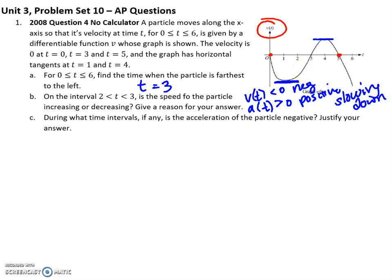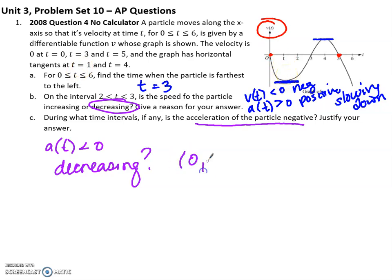Moving on to the last part of the question. During what time intervals, if any, is the acceleration negative? If you're looking for when the acceleration is negative and you already have the derivative, you're looking for when the first derivative of the velocity is decreasing. It's decreasing to begin with until it reaches its low at 1, so from 0 to 1, and then it's increasing until 4, and then decreasing from 4 to 6. Notice that I'm using parentheses because this is talking about concavity since it's acceleration.